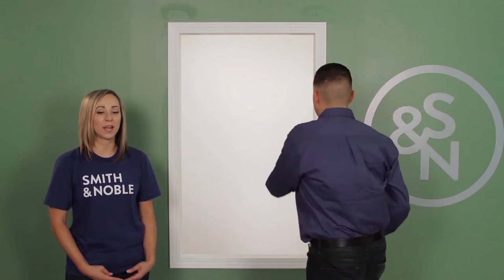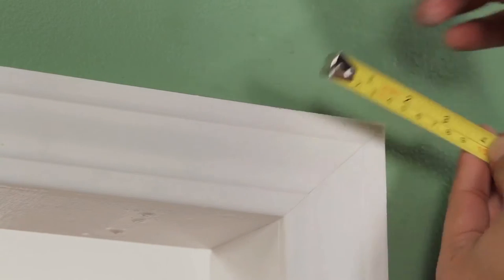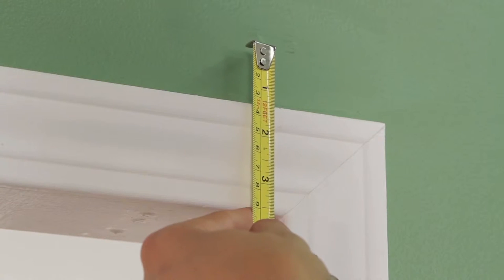To install outside mounted shades, measure two and a half inches from the outside of the window. That's where you'll place the center of the bracket. Measure the bracket height placement based on your original measurements.